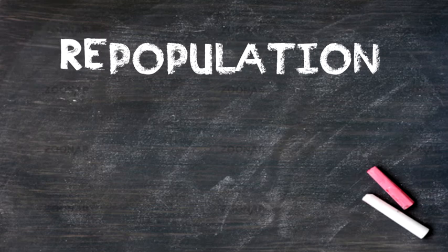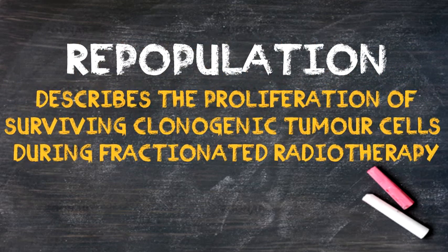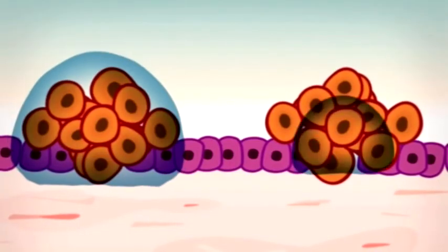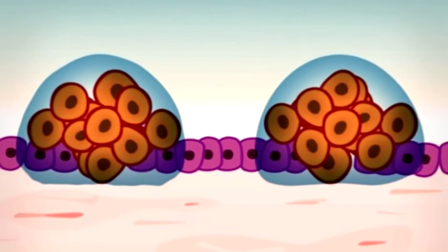Repopulation is described as the proliferation of surviving clonogenic tumor cells during the fractionated radiotherapy. For example, in this video, the tumor cells are killed with radiation.